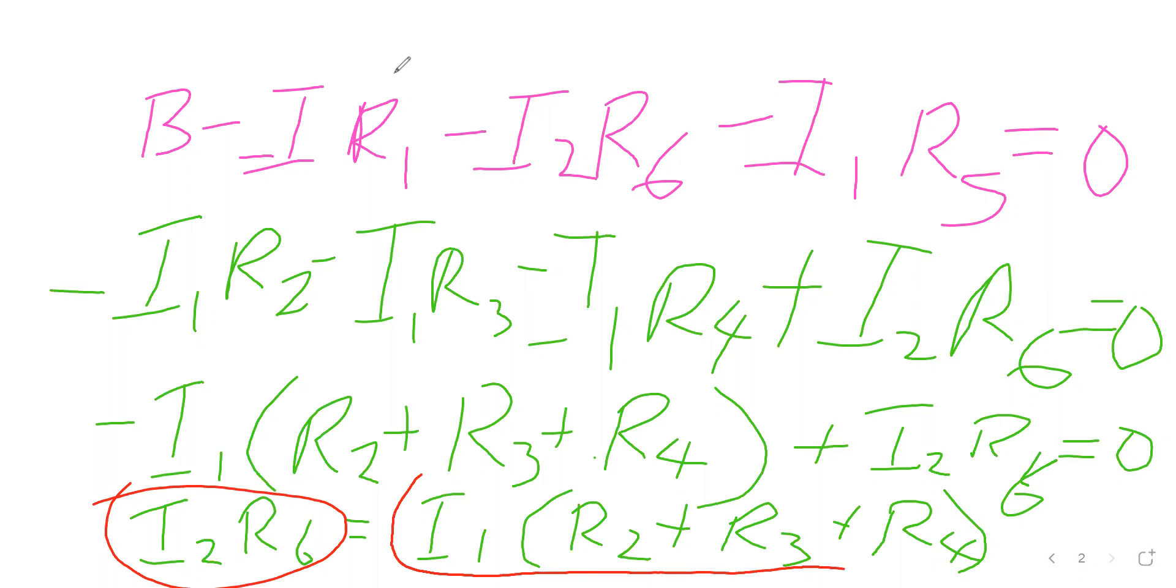The quantity we have here is a voltage across resistors R2, R3, and R4. On the left-hand side of this equation is a voltage drop across resistor R6.